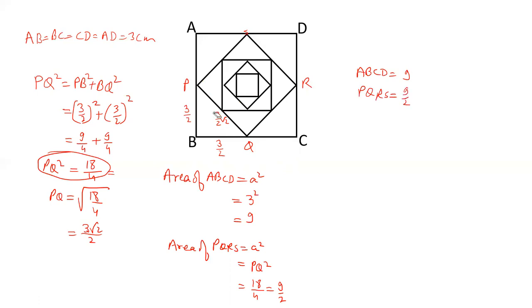Now suppose I join the midpoint of PQRS and the square is XYZW. So area of XYZW will be half of this and that will be 9 by 4.